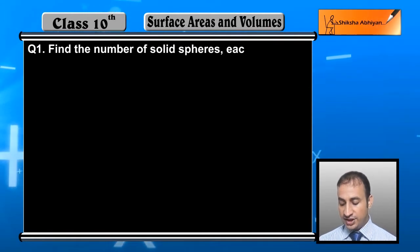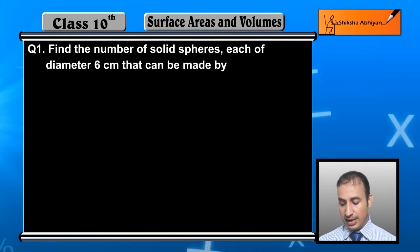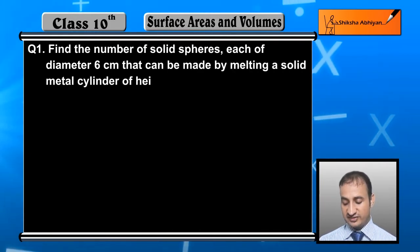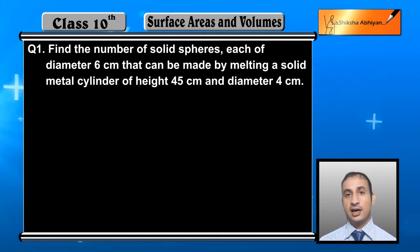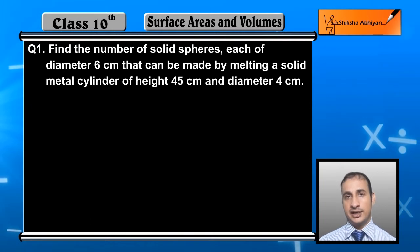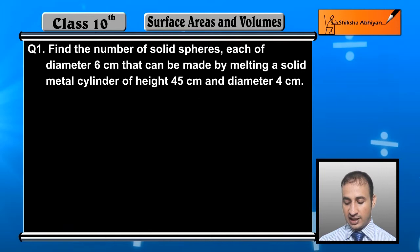Each of diameter 6 centimeter that can be made by melting a solid metal cylinder of height 45 centimeter and diameter 4 centimeter. The question asks how many 6 centimeter diameter spheres can be made if a solid cylinder is melted, and the dimensions of this solid cylinder are height 45 centimeter and diameter 4 centimeter.